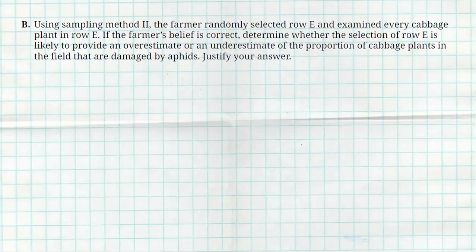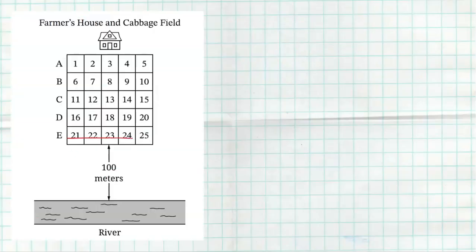All right, question B. Using sampling method two, the farmer randomly selects row E. Row E was the one that randomly got selected, and every cabbage in every region in that row is going to be looked at. If the farmer's belief is correct, determine whether the selection of row E is likely to provide an overestimate or an underestimate for the proportion of damaged cabbage plants. Now if we go back to our picture here, he's basically selecting all of these. So 21, 22, 23, 24, 25, all of those cabbage plants are going to be selected, and that's what he's going to estimate. Now remember his belief, he's going to get an estimate for row E, but unfortunately nowhere else. He thinks that row E is probably going to be higher because it's closer to the river, which means he's going to get that overestimate.